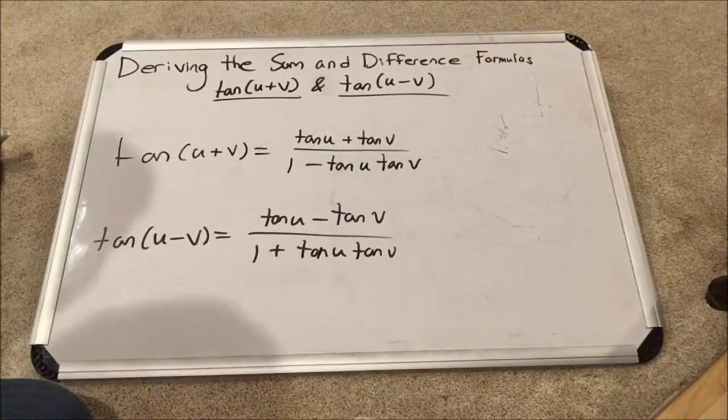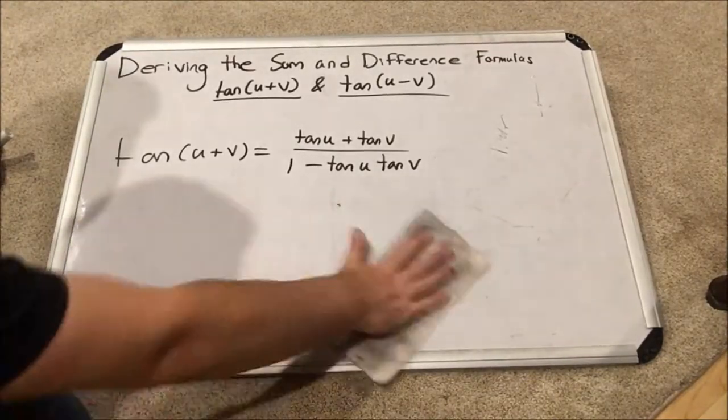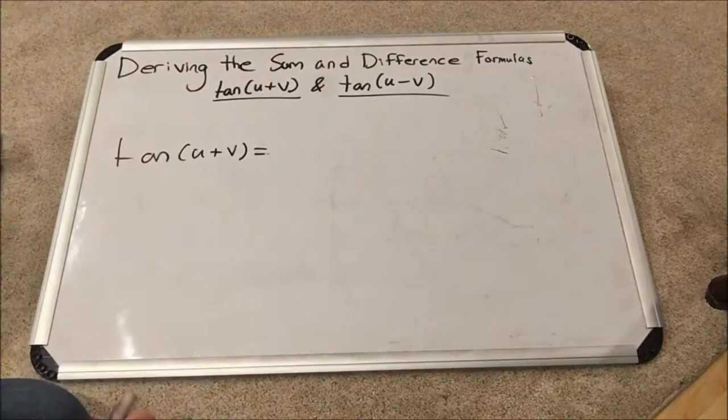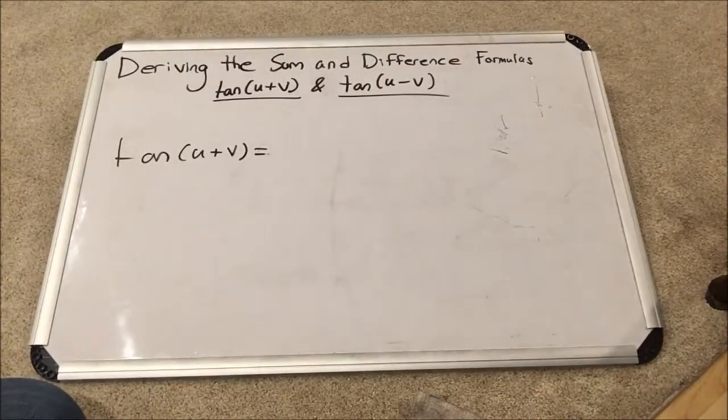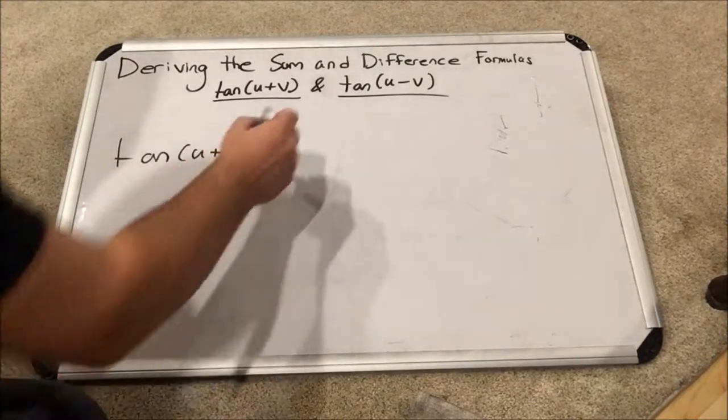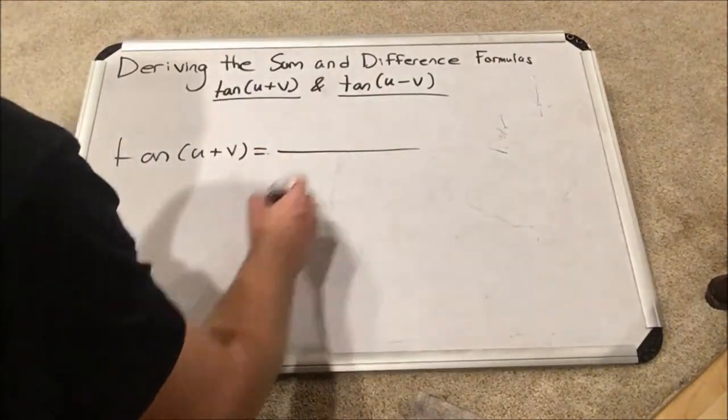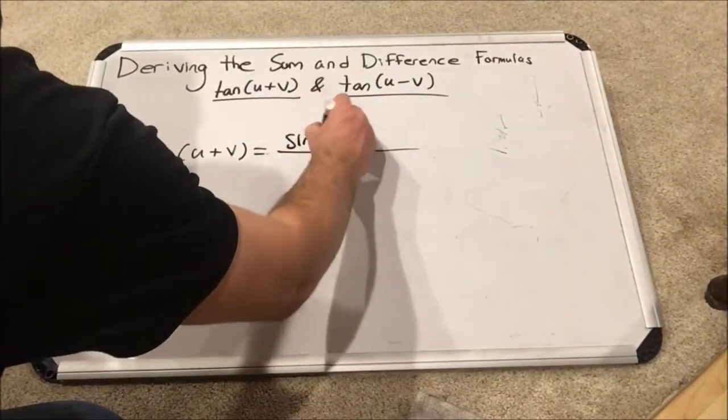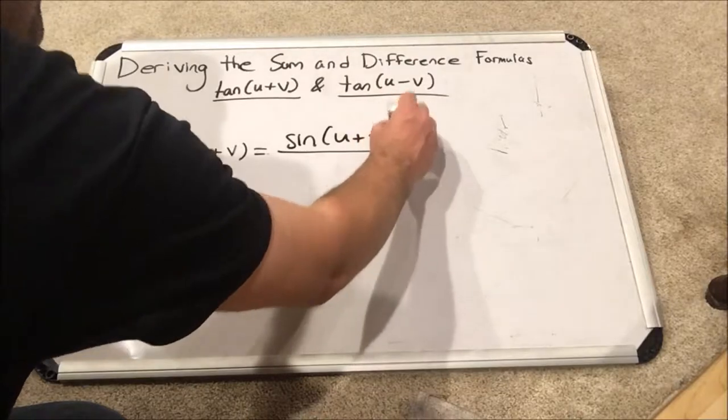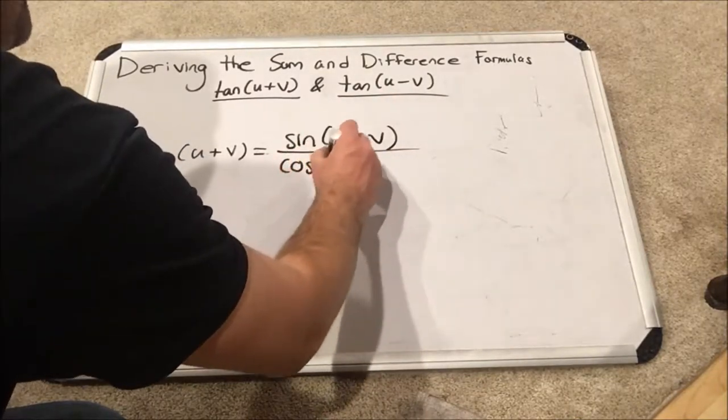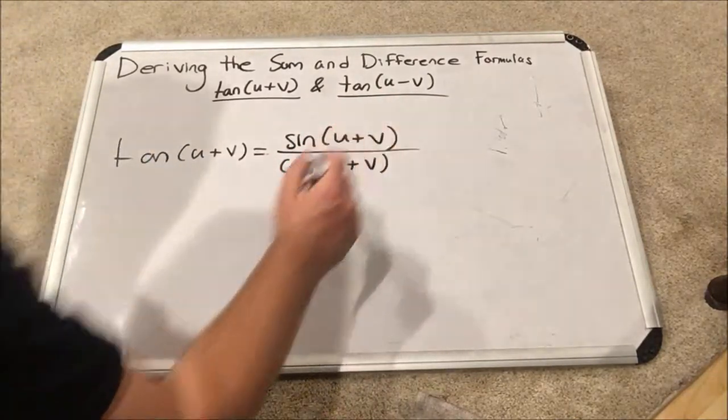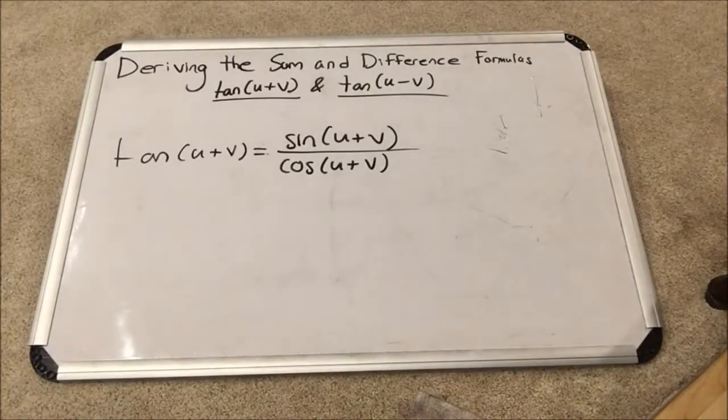So here's how we are going to begin. Knowing that tangent is defined as sine over cosine with the quotient identity, I am going to write tangent of u plus v as the sine of u plus v over the cosine of u plus v. This is the quotient identity, and this is completely valid.